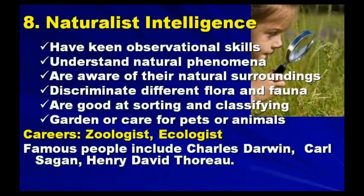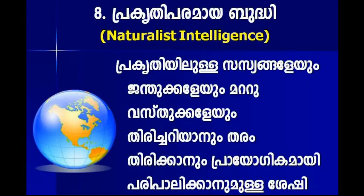Naturalist intelligence enables human beings to recognize, categorize, and draw upon certain features of the environment. People with naturalist intelligence have a sensitivity to and appreciation for nature. It focuses on how people relate to their natural surroundings, and naturalists often have a special ability to grow plants, vegetables, and fruit.